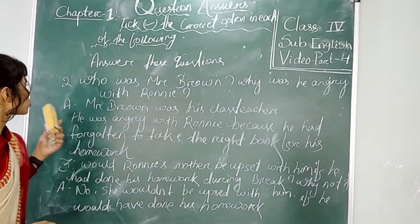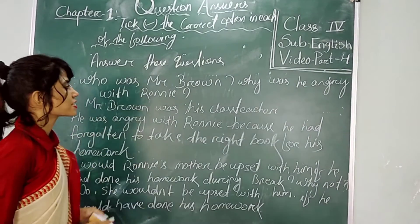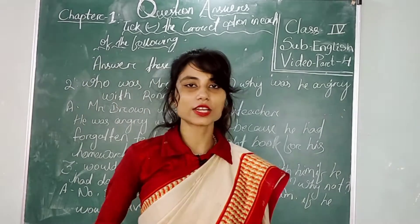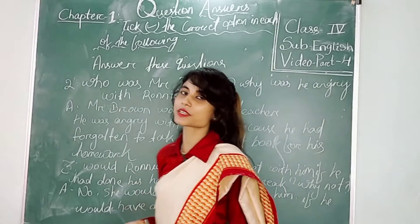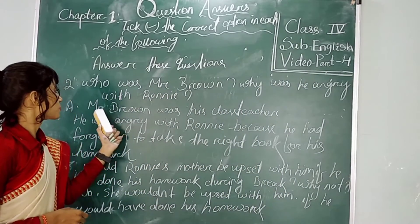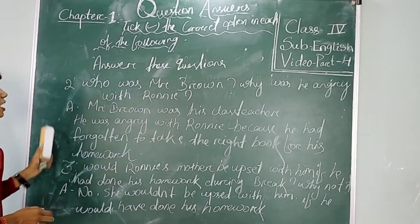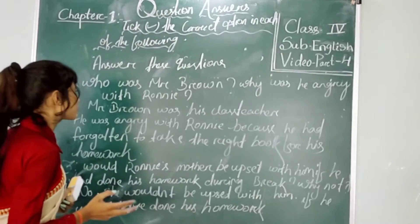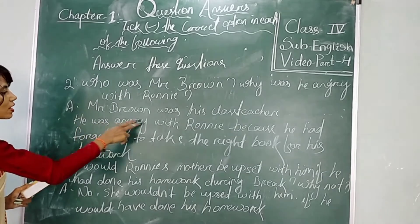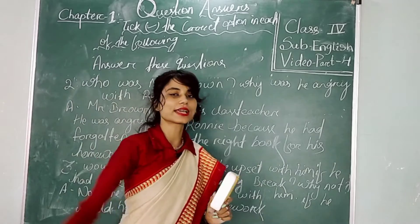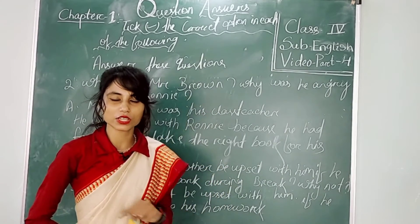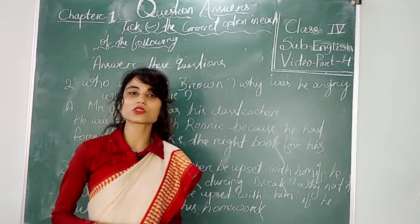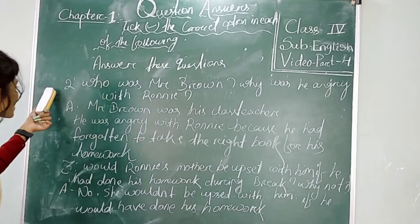Because this is number 2 — the complete answer. Number 2 was: who was Mr. Brown and why was he angry with Roni? I had already explained this chapter and told you who was Mr. Brown. So the answer is: Mr. Brown was the class teacher of class 4. And why was he angry with Roni? There is a reason — because Roni had not brought his homework. That is why Roni's class teacher was angry with him. If you forget to take your homework to school, then obviously your teacher will be angry with you — like this thing happened with Roni.